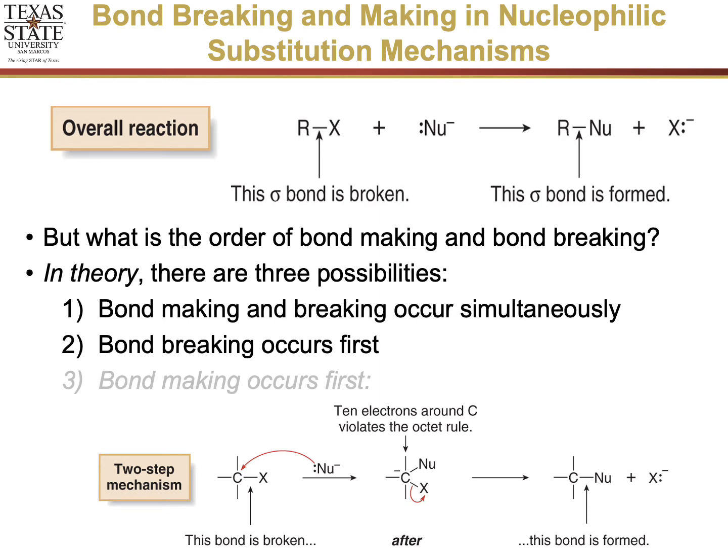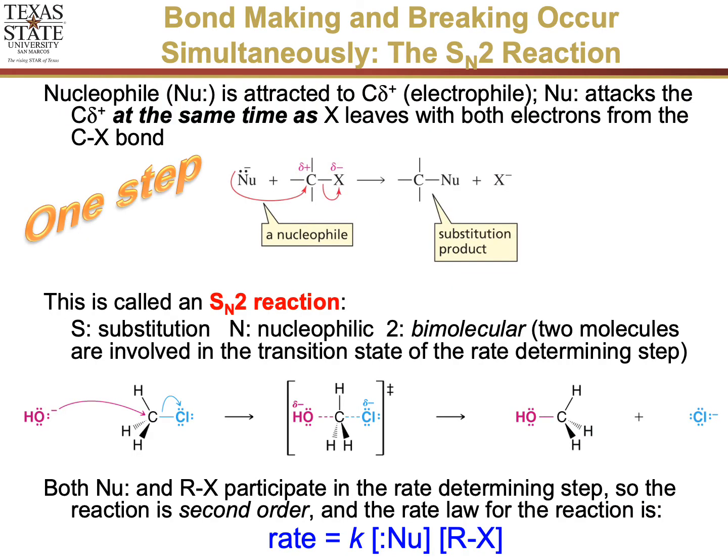And that would have the nucleophile creating a bond. Now, the problem with this is if we do this, we're actually going to end up with five bonds to carbon, meaning we're going to have ten electrons around the carbon and therefore that's going to violate our octet rule. And that means that our number three option here, bond making occurs first, will not happen. So that leaves us two options, bond making and breaking occurring simultaneously, and then bond breaking first and making some kind of charged species. Let's look at the first one.